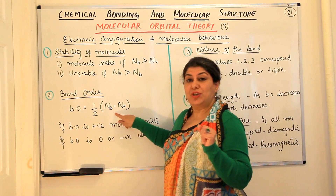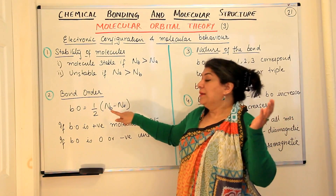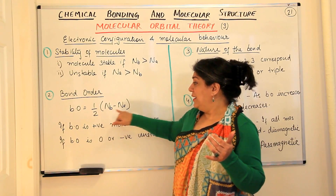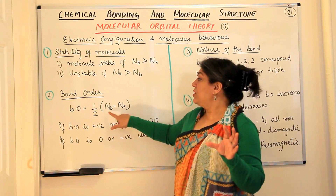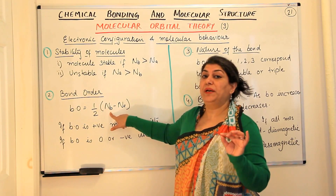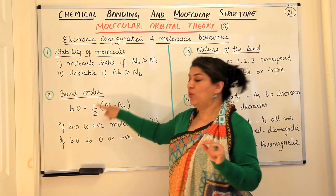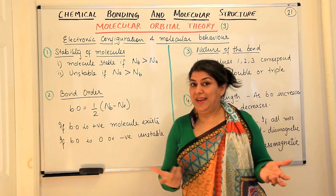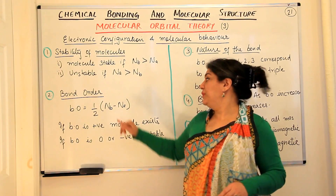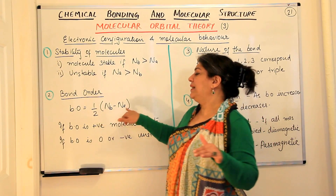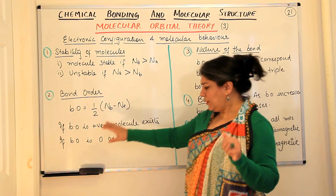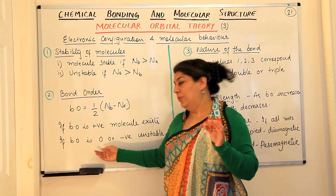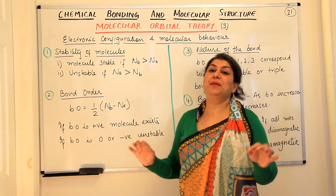The bond order obtained gives us an idea of the number of bonds — bond order 1, 2, or 3 corresponds to single, double, or triple bonds. It also tells us about stability: a positive bond order means the molecule is stable, which only happens when Nb is greater than Na. If the bond order is zero or negative, the molecule is unstable and does not exist.